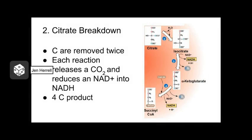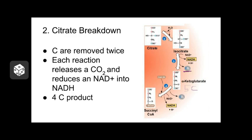In phase two of the Krebs cycle, citrate is broken down a couple of times so energy can be harvested. In the first step, citrate — a six-carbon molecule — is broken down into an intermediate with only five carbons, meaning a carbon was snapped off as CO2 waste. Because that reaction is exergonic, energy is released and captured by NADH. This reaction happens again: the five-carbon intermediate loses another carbon as CO2, leaving a four-carbon intermediate, and again energy is captured by NADH.